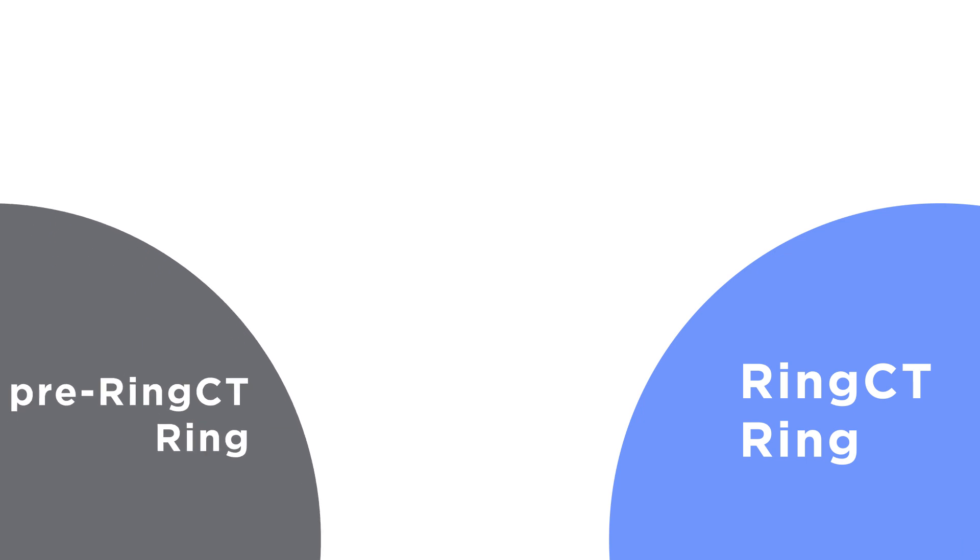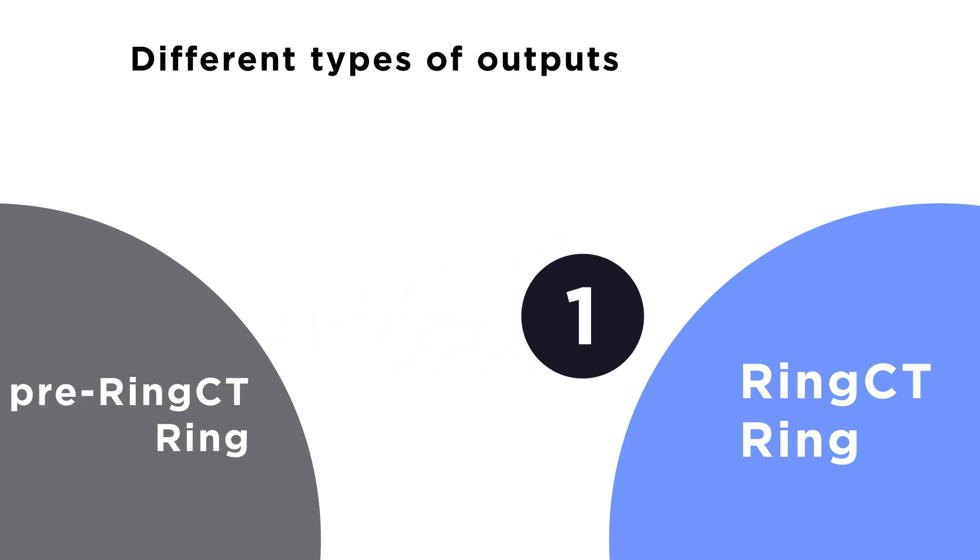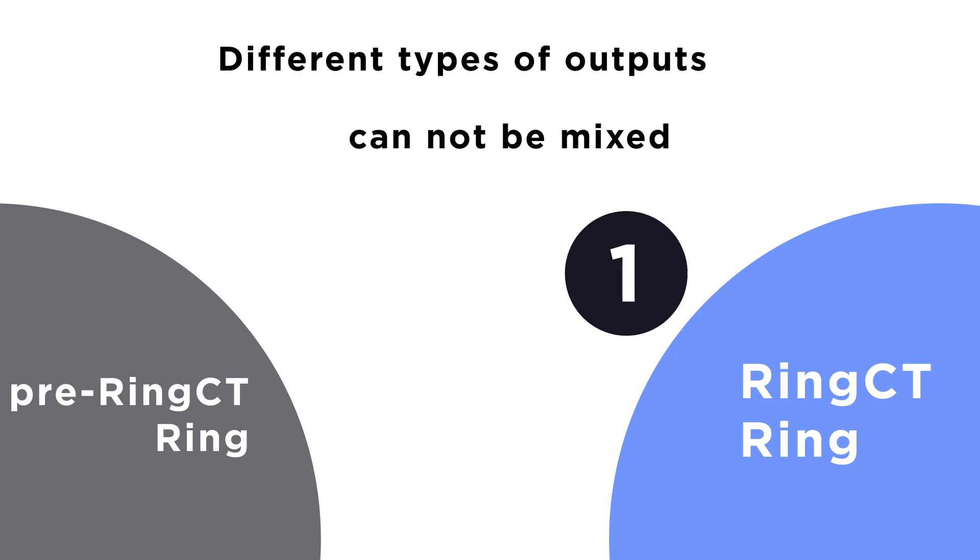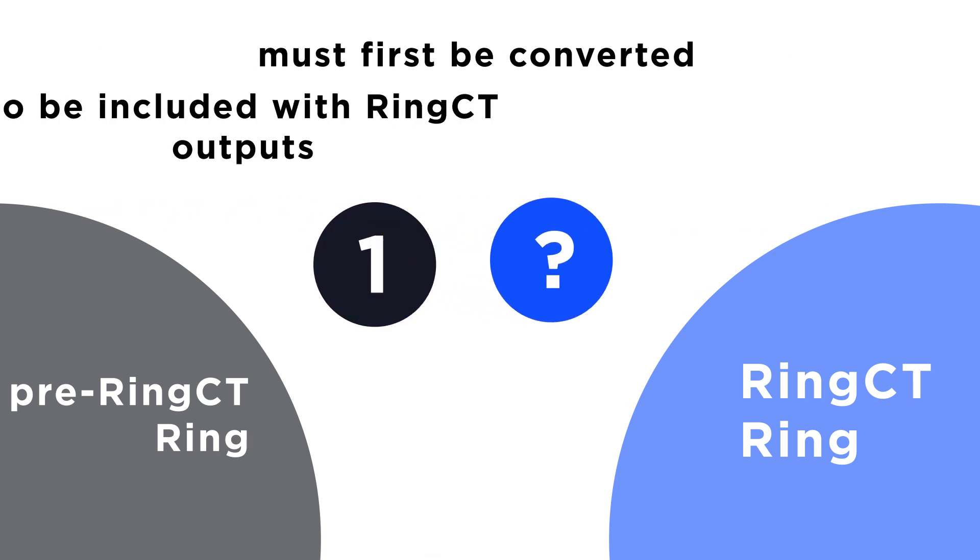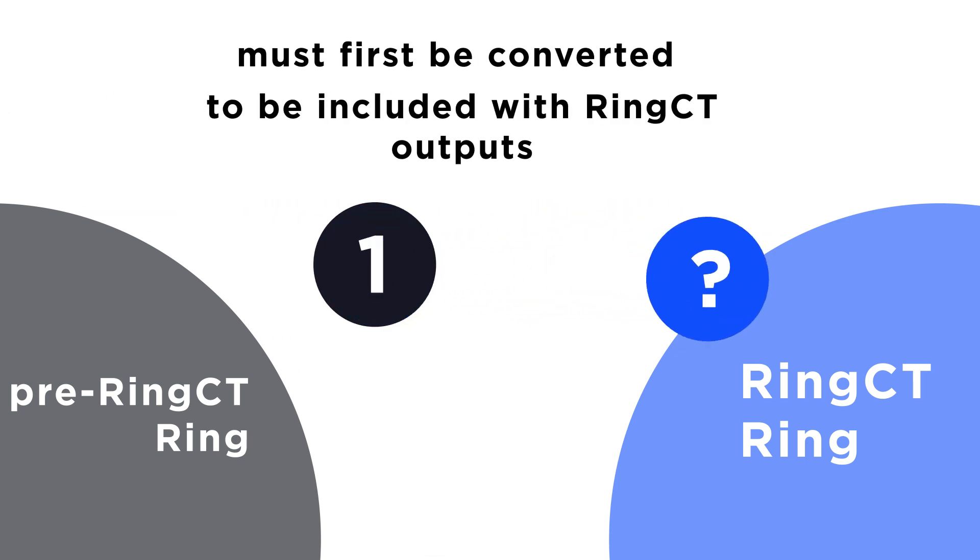It should be noted that Monero ring signatures can't include both pre-Ring CT outputs and masked Ring CT outputs in a single ring. So, like newly created Monero, a pre-Ring CT output must first be converted to a Ring CT output before it can be included in a ring signature with other Ring CT outputs.